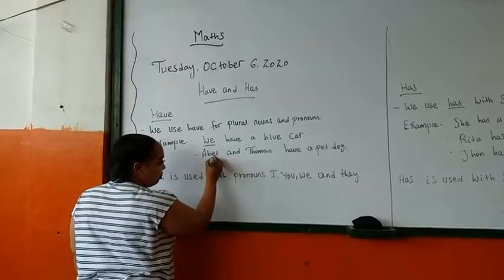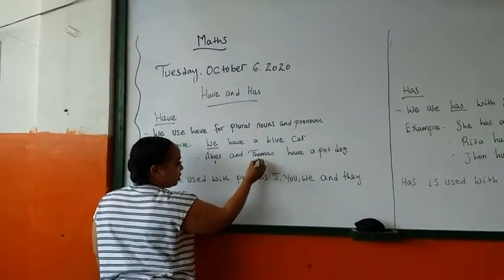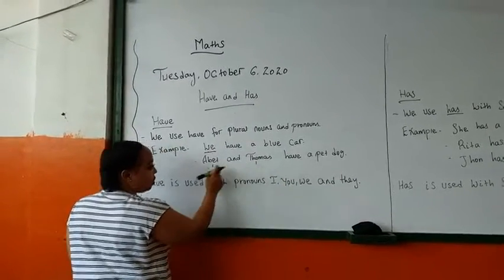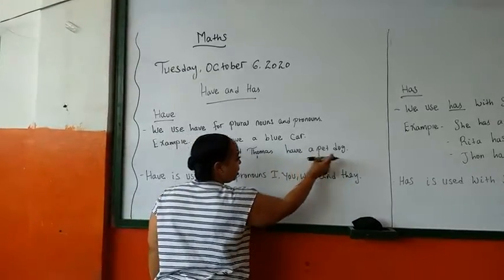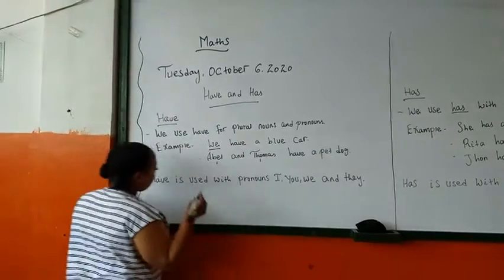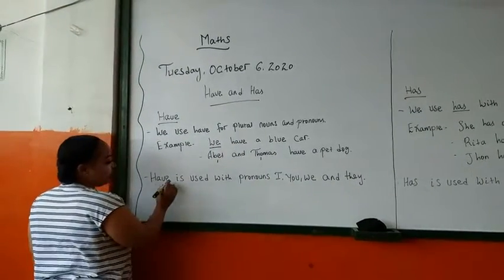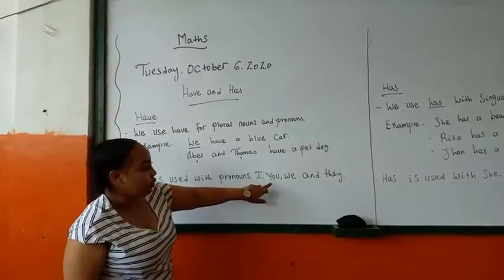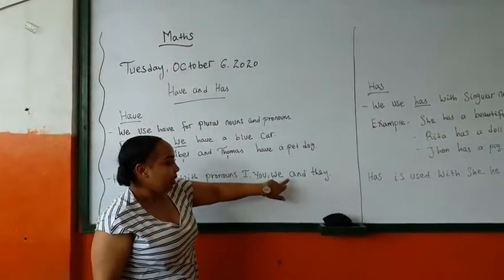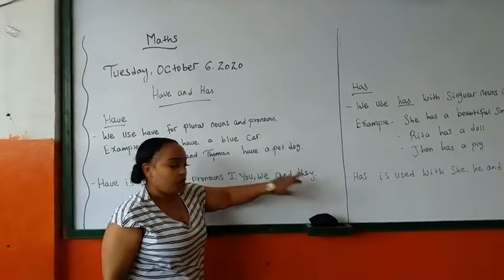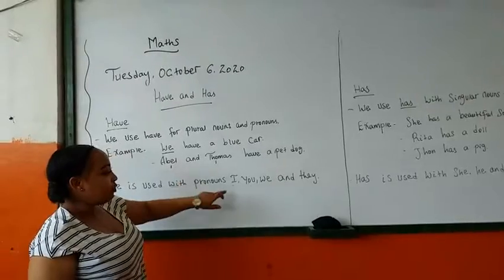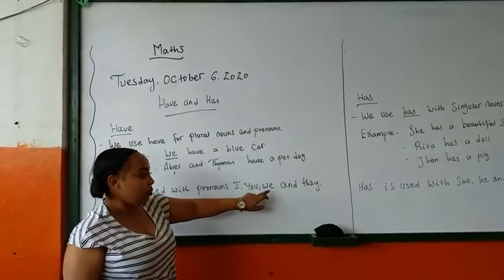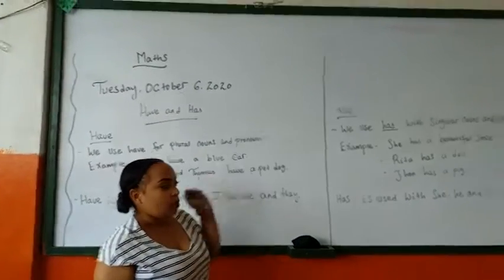Avel is one person, Thomas is another person, so there are two persons here. So 'have' is used with the pronouns I, you, we, and they.